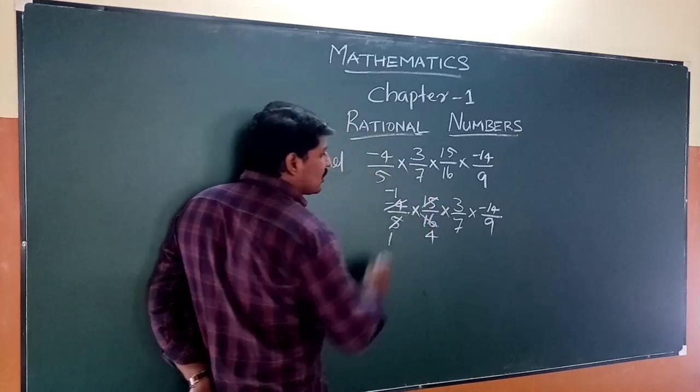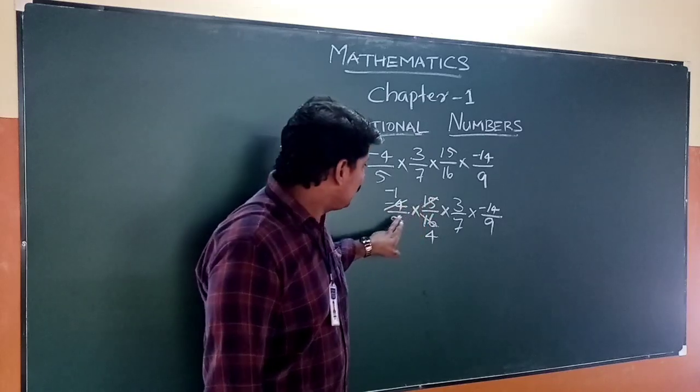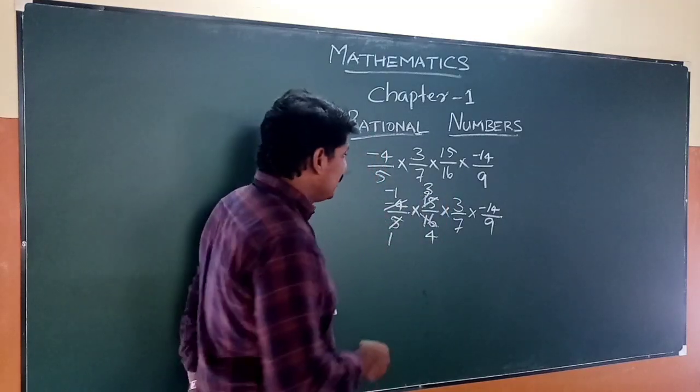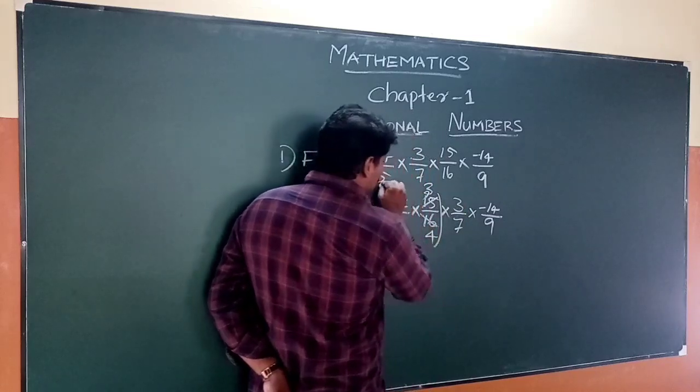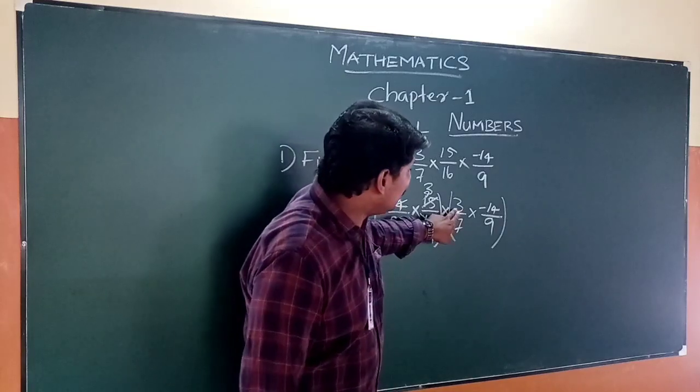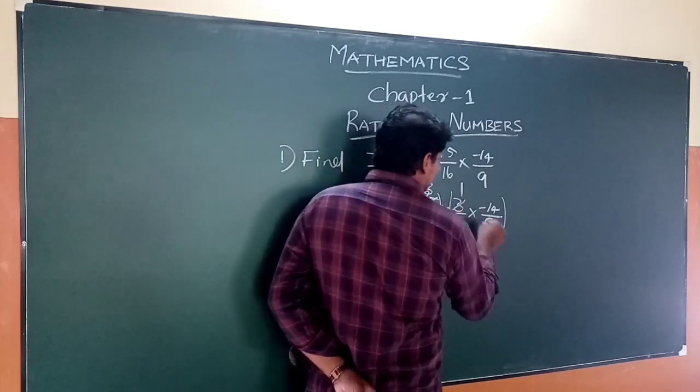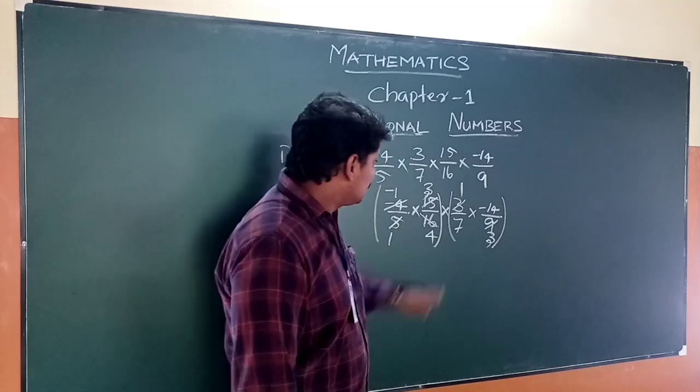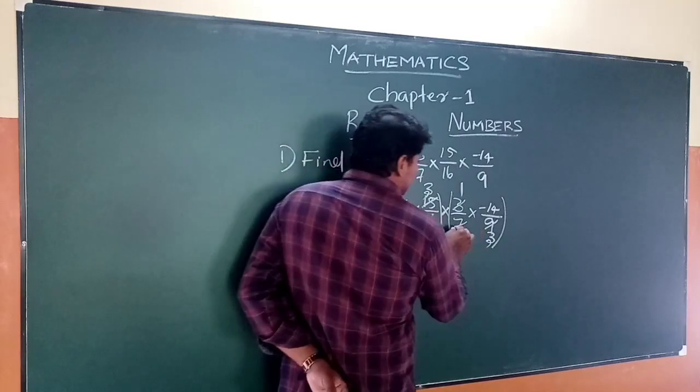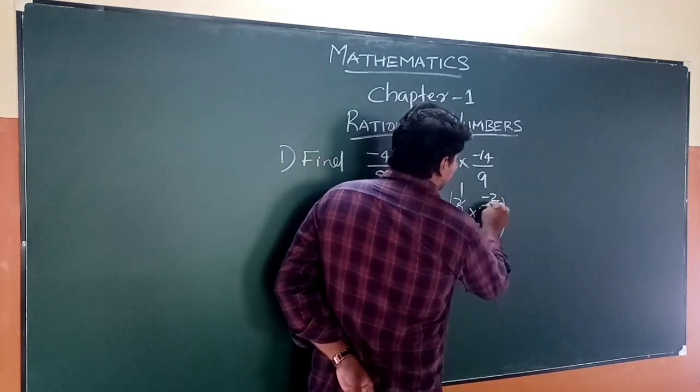Continuing the simplification: 15 divided by 5 is 3, and 5 divided by 5 is 1. Then 3 divided by 3 is 1, and 9 divided by 3 is 3. Also, 7 divided by 7 is 1, and 14 divided by 7 is 2.